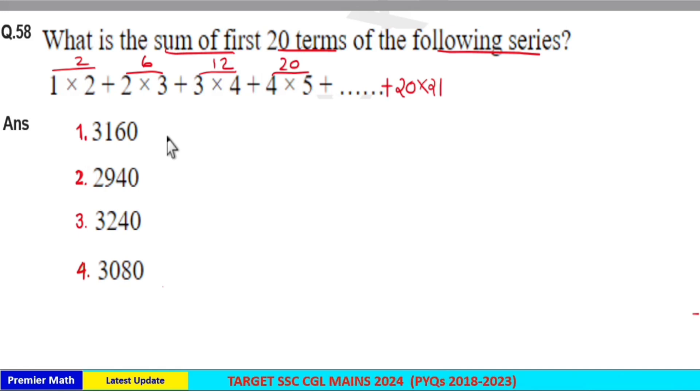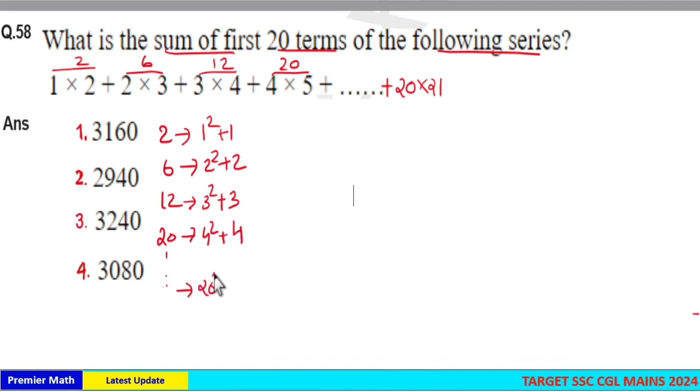You can see similarity between these numbers. 2 I can write as 1 square plus 1, 6 I can write as 2 square plus 2, and 12 is 3 square plus 3, 20 is 4 square plus 4. Then 20th term must be 20 square plus 20 which is 420.